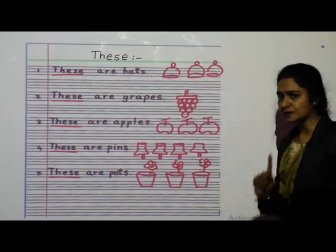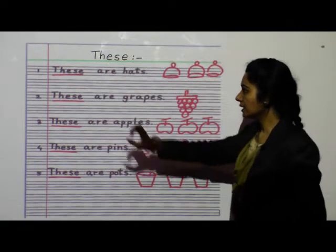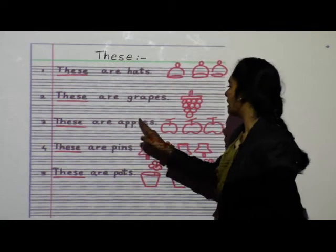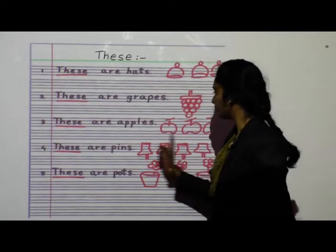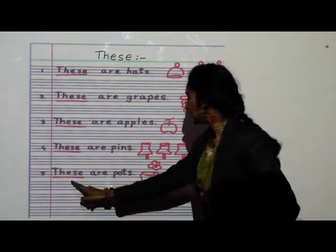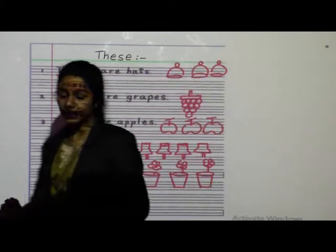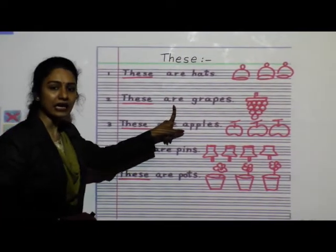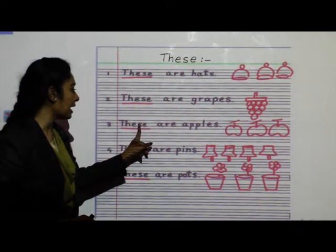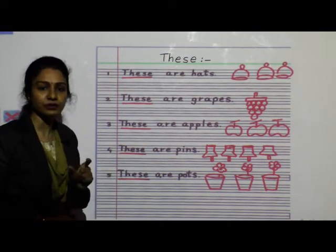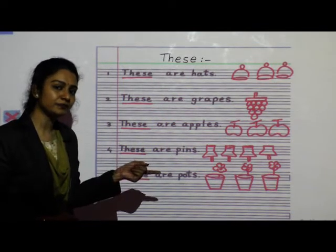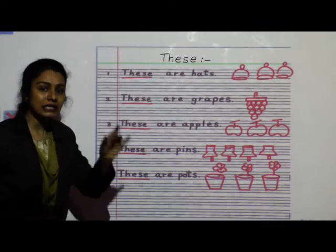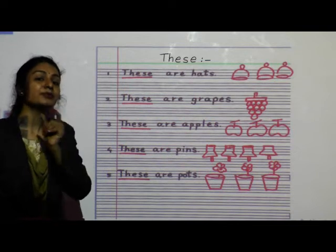Now children, if you will observe one thing: these are hats, these are grapes, these are apples, these are pins, these are pots. What have we done? Everywhere, after 'these,' we have used 'are' — A-R-E. Because 'these' and 'those' are used in plural form.